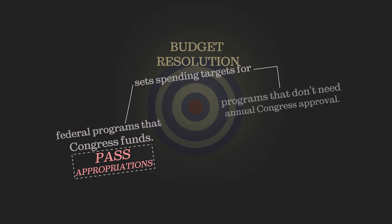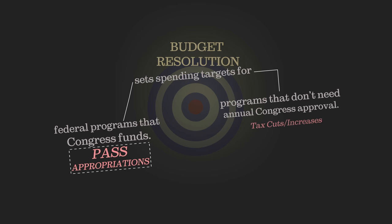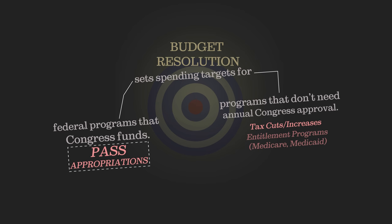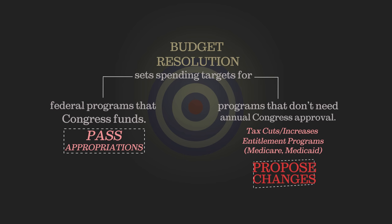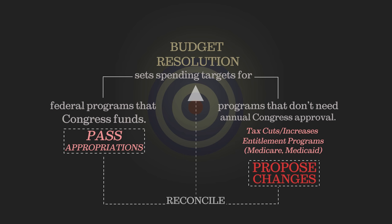There are also programs funded by the federal government that don't need annual approvals from Congress. These include tax cuts or increases and so-called entitlement programs like Medicare and Medicaid. So the budget resolution also instructs the congressional committees in charge of those programs to propose changes in the law that would reconcile how much those programs cost with the target set by the budget.